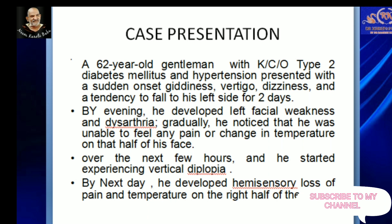Here is a 62-year-old gentleman with known type 2 diabetes and hypertension who presented with sudden onset of giddiness, vertigo, and dizziness, with a tendency to fall towards the left for 2 days. By evening he developed left facial weakness and dysarthria, and gradually noticed he was unable to feel pain and temperature sensation over half of his face.